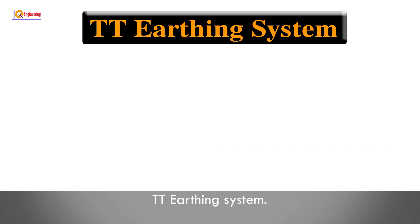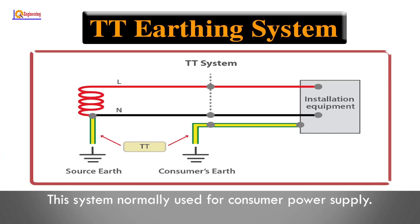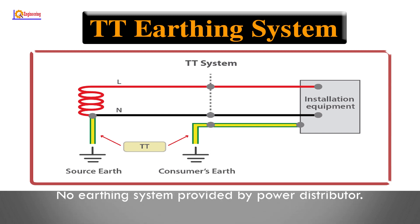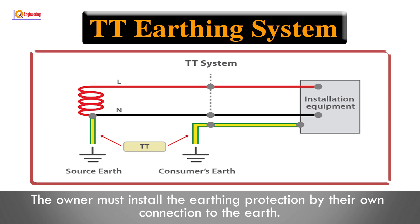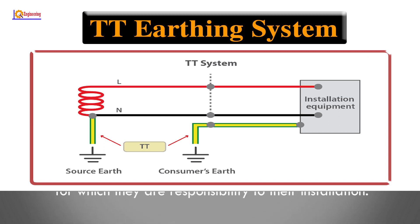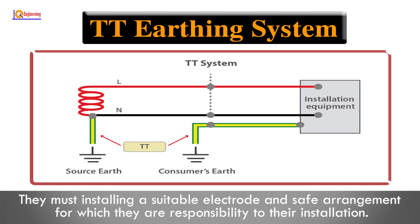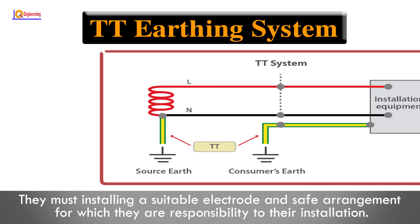TT earthing system: This system is normally used for consumer power supply. No earthing system is provided by the power distributor. The owner must install the earthing protection by their own connection to the earth, installing a suitable electrode and safe arrangement for which they are responsible.